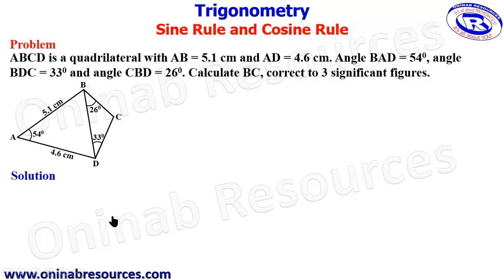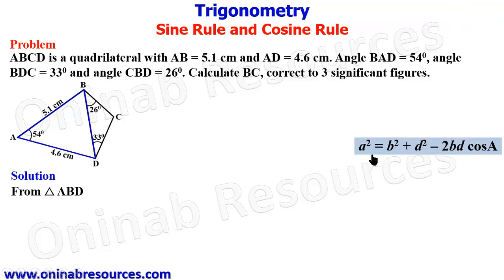So in our solution, from triangle ABD, this is the triangle, we're going to use the cosine rule. The appropriate cosine rule that will work is this, because we are looking for side A, we know B and D and angle at A.